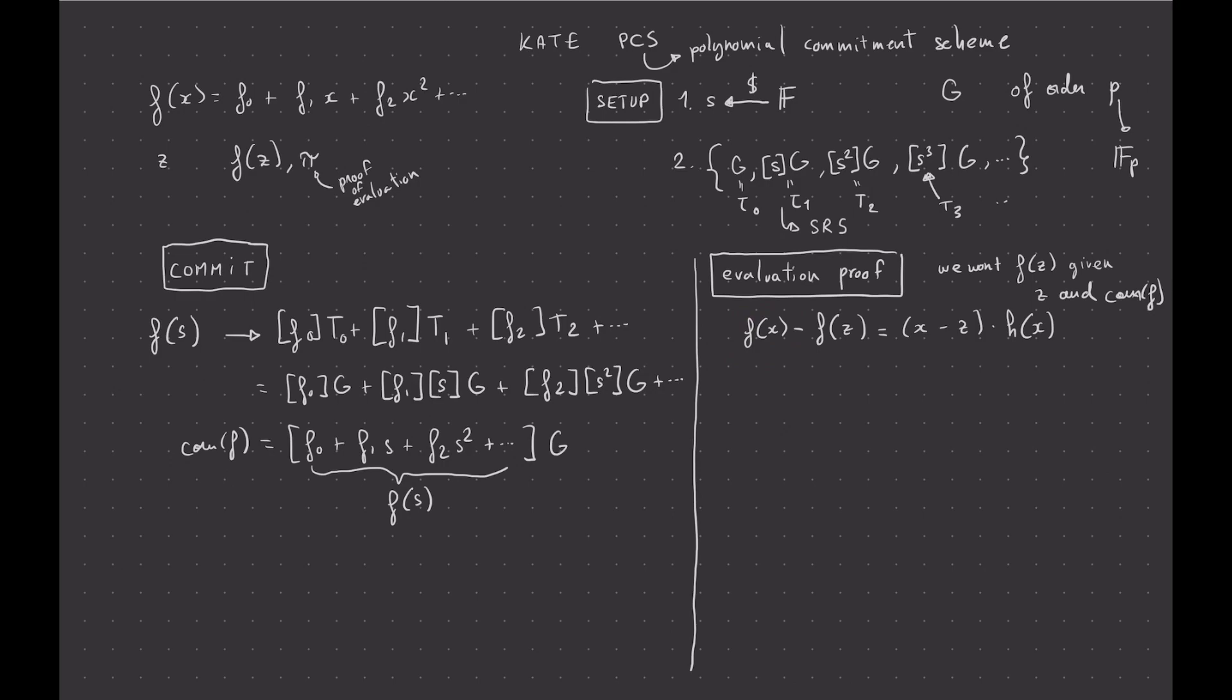So anyway, with that knowledge in mind, the verifier could say, okay, you can give me the evaluation of f(z). But if this is indeed the correct evaluation of f(z), then there must exist this polynomial h such that we have this identity. And so pretty much what the prover can do is to send a commitment to h, or hiding of h, and then the verifier can verify that.